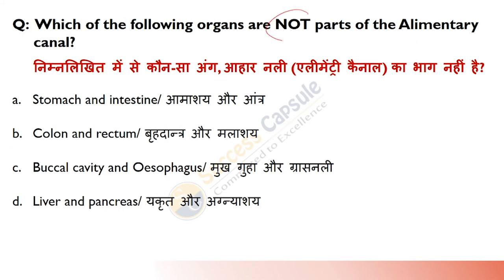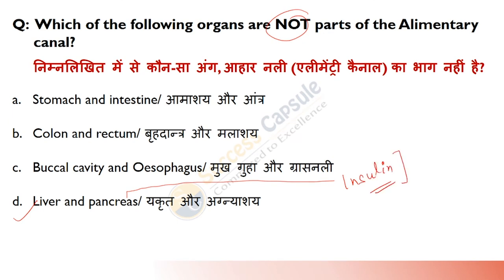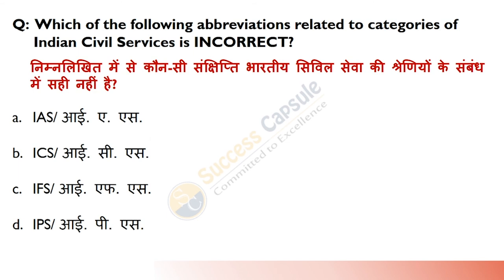Which of the following organs are not parts of the alimentary canal? Answer is D — Liver and Pancreas are not part of the alimentary canal. The alimentary canal includes mouth, buccal cavity, oesophagus, stomach, small intestine and large intestine. A related question: the pancreas secretes which hormone? Answer is Insulin. What disease results from insufficient insulin? Answer is Diabetes.